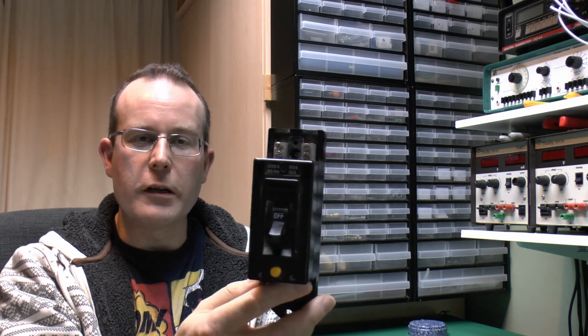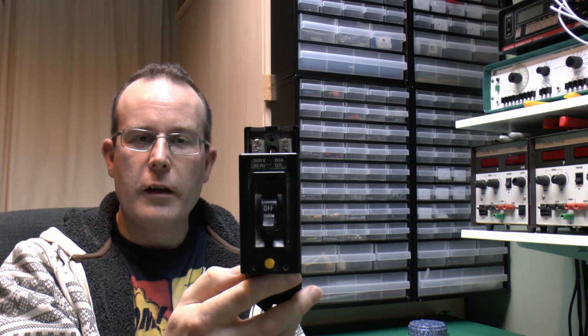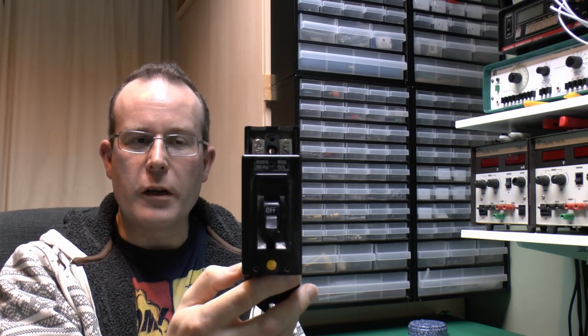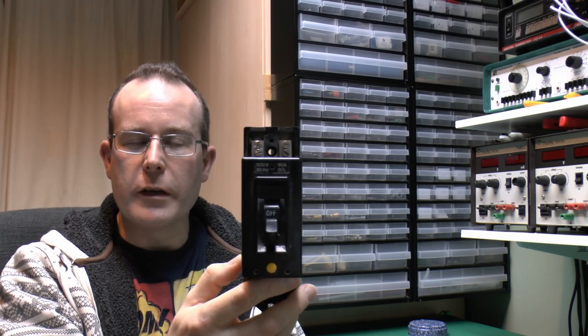Hello, I'm JW, and in this video we're looking at the Crabtree voltage operated earth leakage circuit breaker. This was one of the most common types in use in the UK prior to 1981.